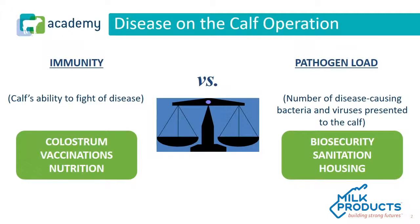In order to see disease on a calf operation, it's usually one of two things or a combination of both. One is the calf's ability to fight off the disease, or the number of disease-causing organisms presented to the calf. These disease-causing organisms are typically bacteria, viruses, or protozoa. A calf has a low ability to fight off disease, and when there are a lot of organisms, that sets up a very difficult management situation.